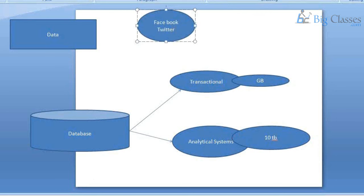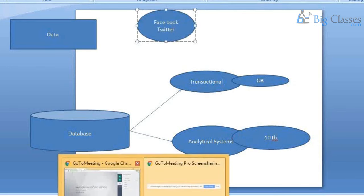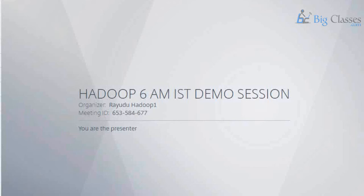Suppose you have a data center. Within the data center you can have thousands of nodes working in a cluster. In such a cluster, with the help of current analytics, you can predict on a certain date when a particular node will fail. Such intelligent analytics has been built into today's systems.